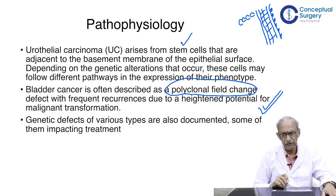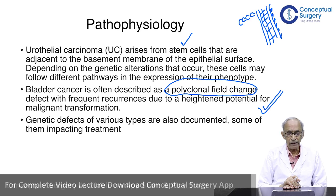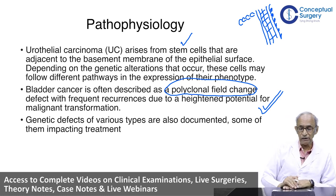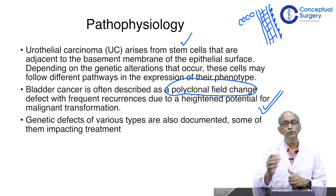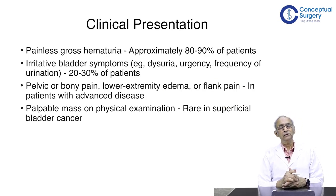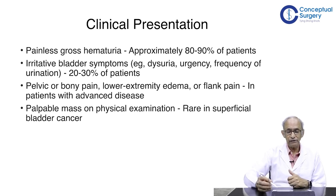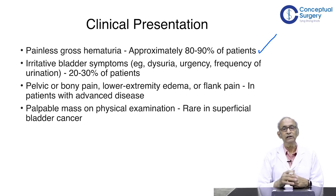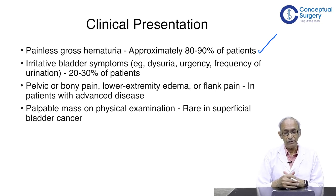Genetic defects of various types are also documented and they impact treatment. The key point to remember is that bladder cancer is a polyclonal field change of the urothelium, meaning any part lined by urothelium becomes prone to malignancy if one area shows malignancy. The outstanding presenting symptom of bladder cancer is painless gross hematuria — not microscopic, but visible gross hematuria — and approximately 80 to 90 percent of patients present with this symptom.